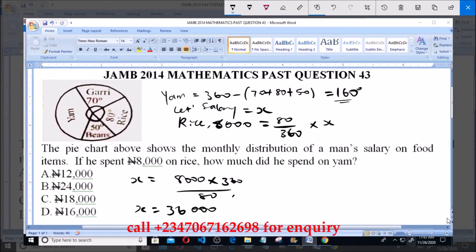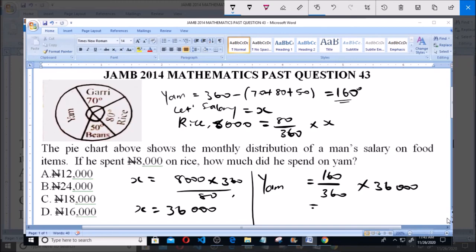we can now calculate how much he spent on yam. So the amount he spent on yam will be equal to the degree of yam, which is 160, all over 360 multiplied by 36,000, and that will give us 16,000 Naira. So the man spent 16,000 Naira.